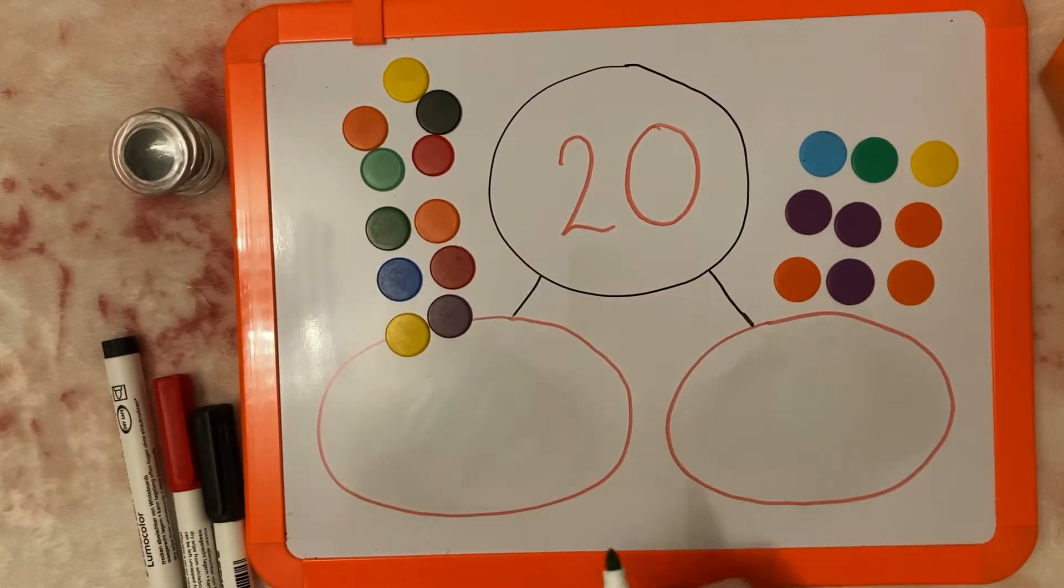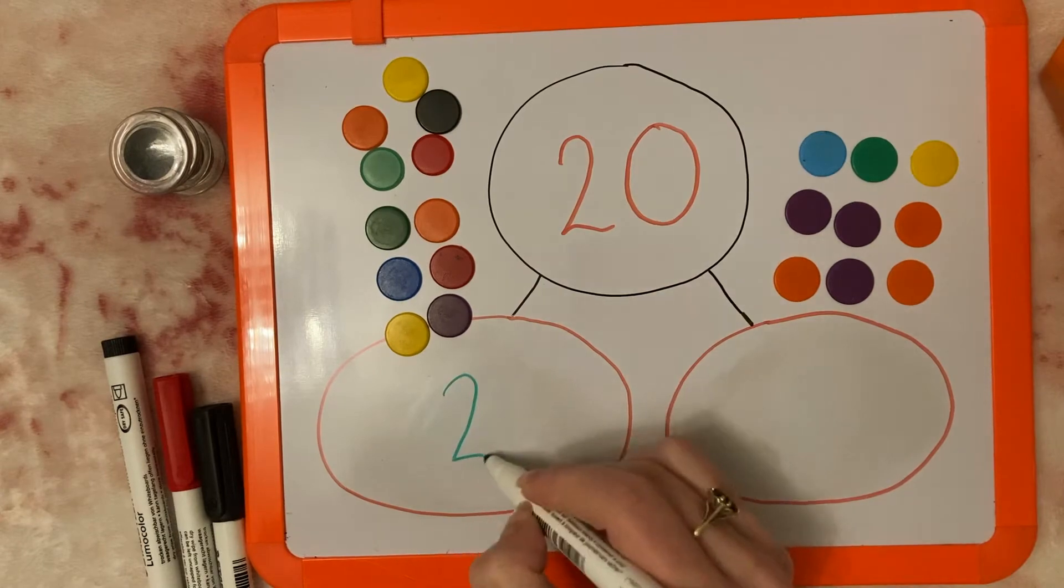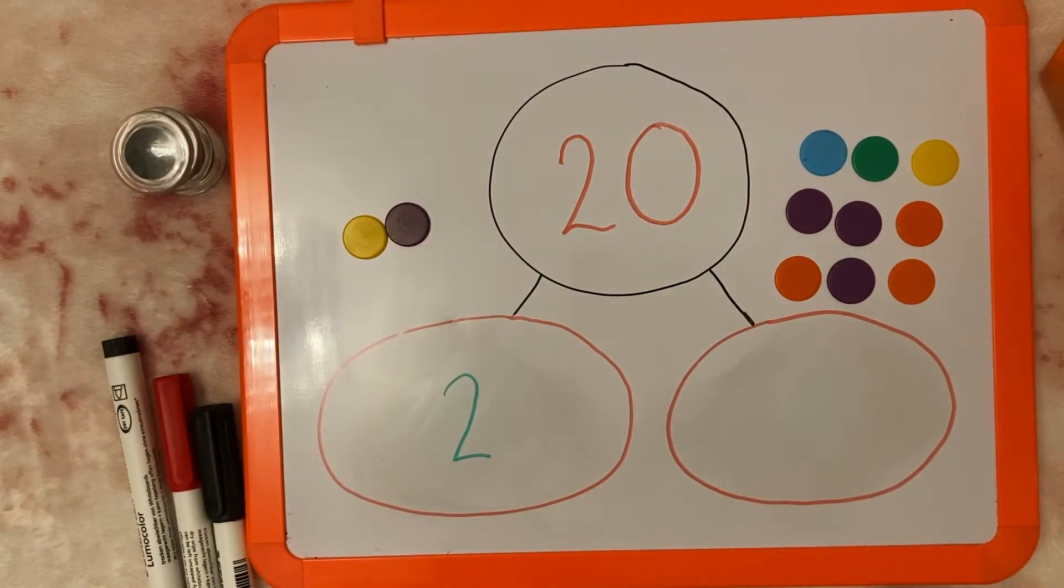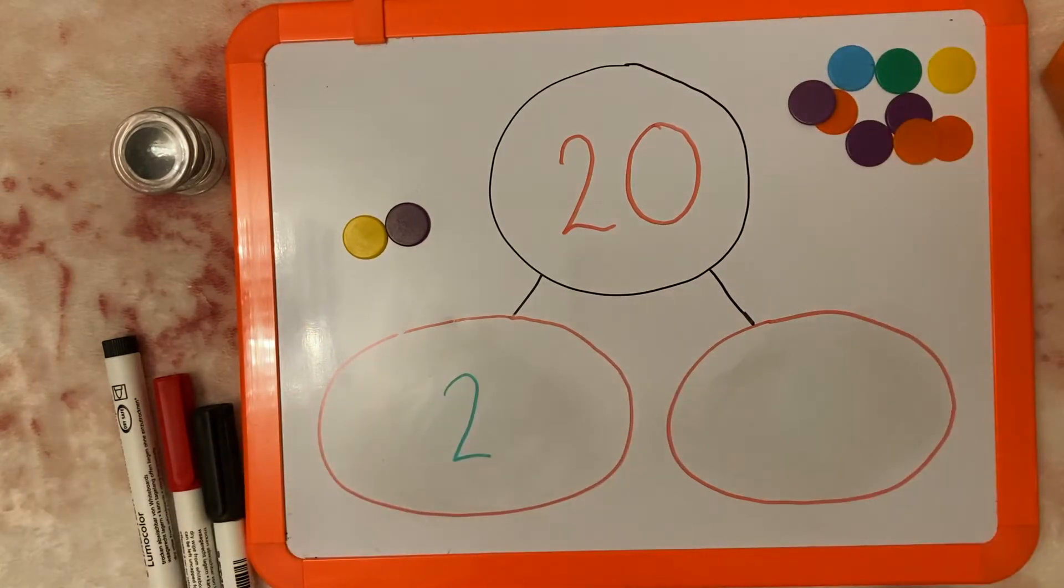So what about if I put 2 on this side? So we've got 2 on this side. Now we need to work out how many we are going to be adding to 2 to give us 20.